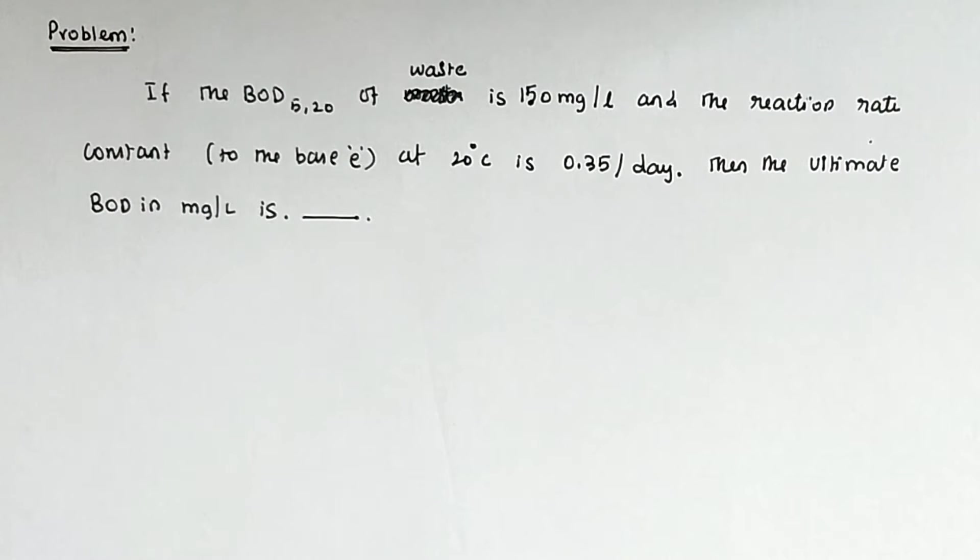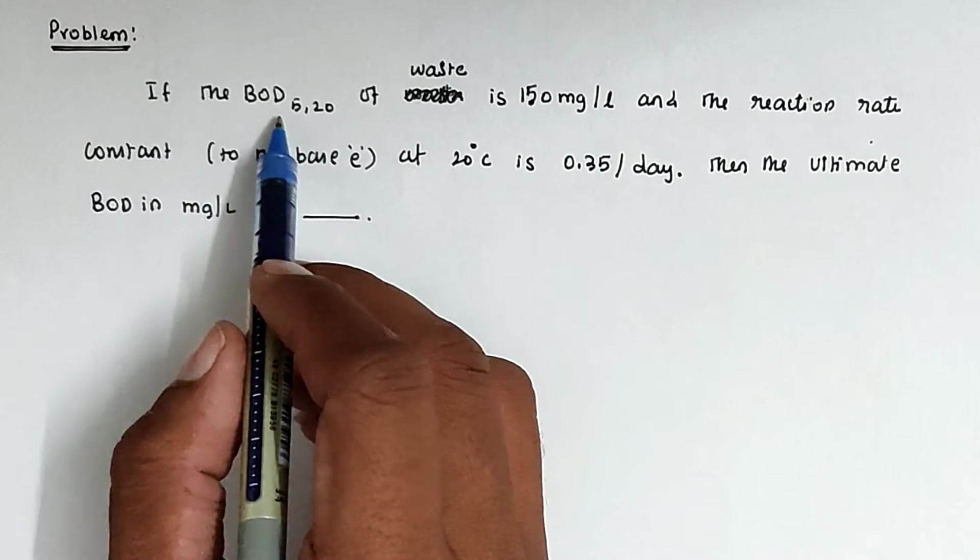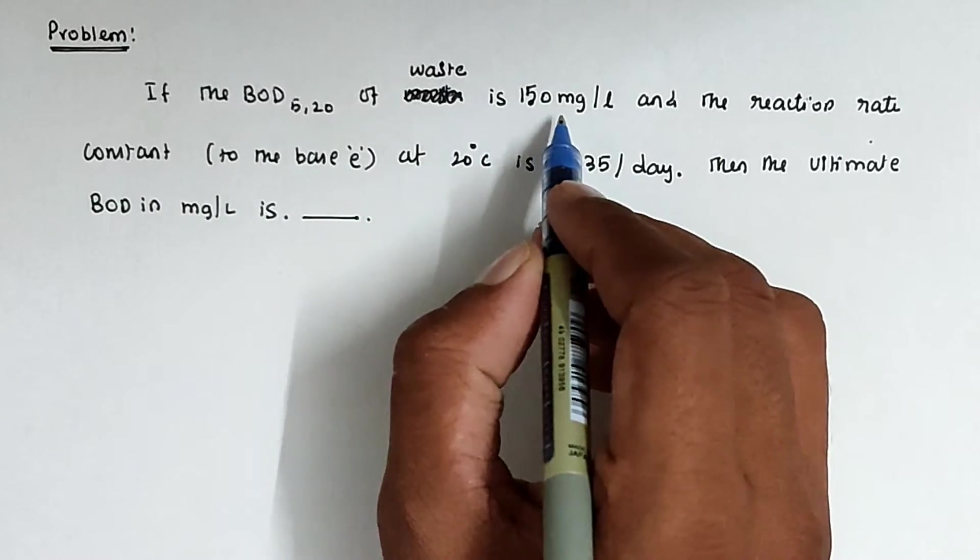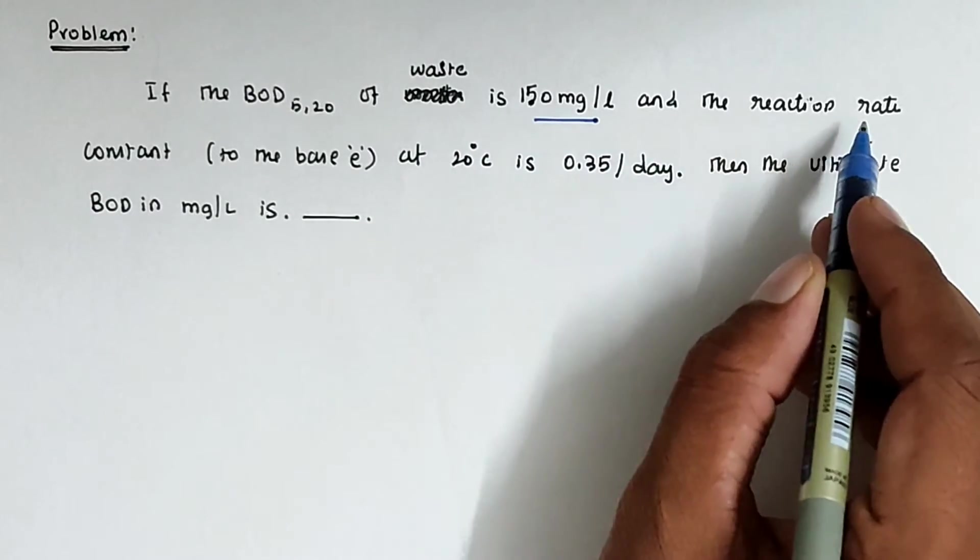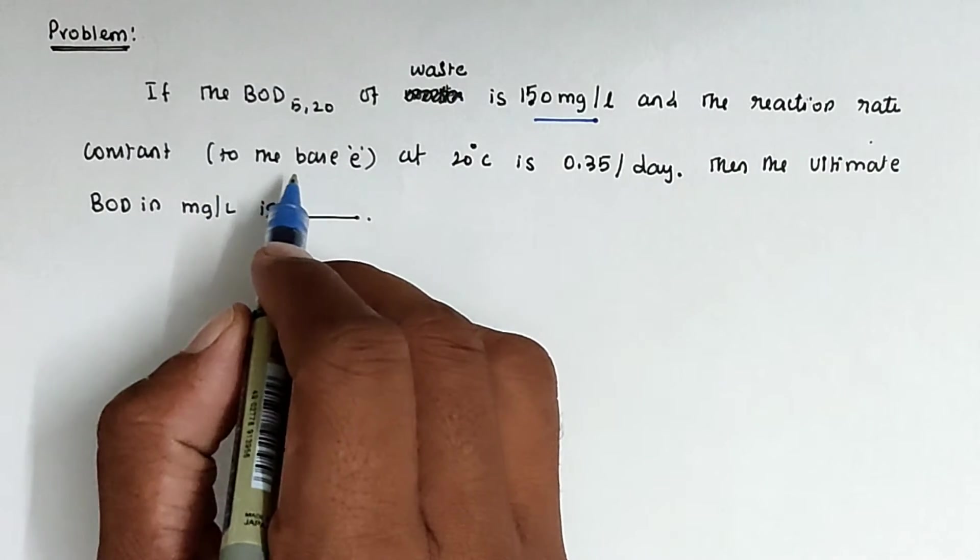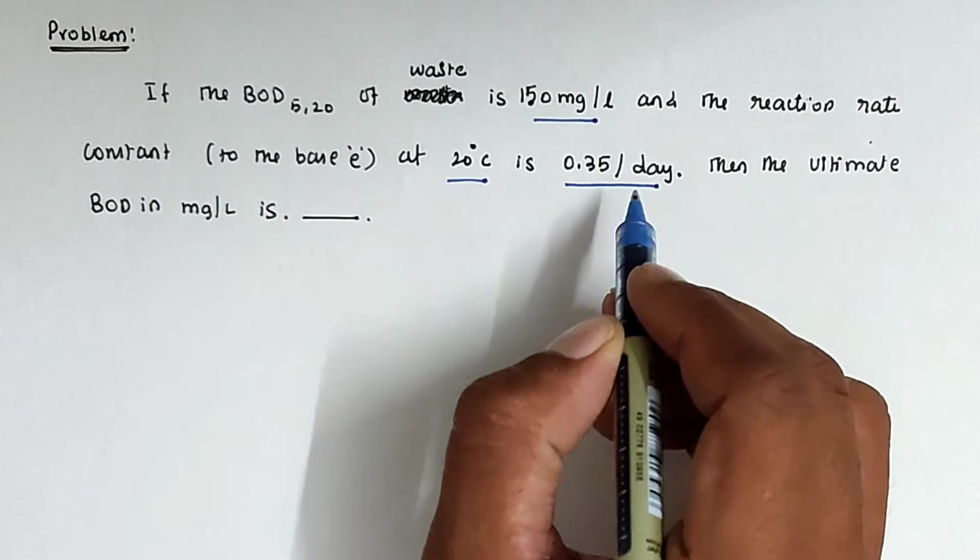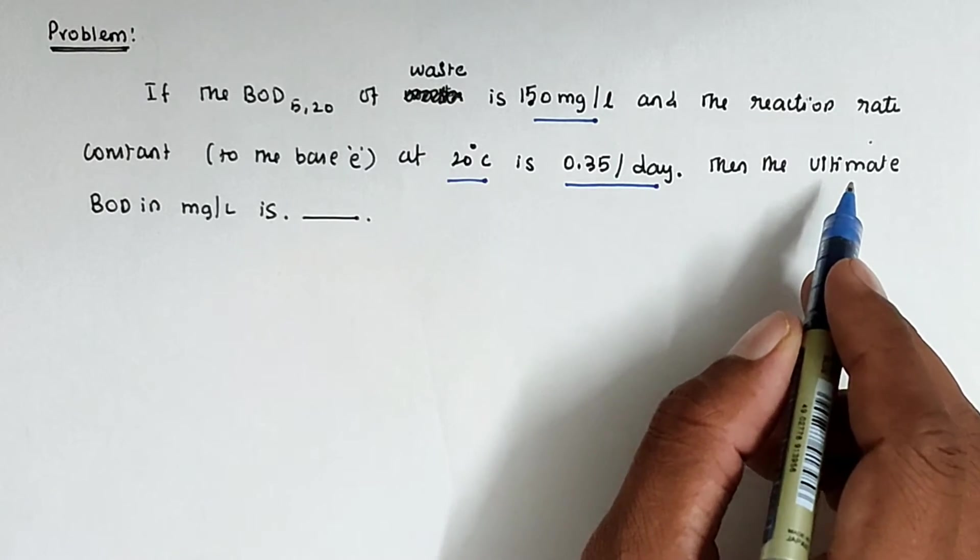Hello friends, welcome to Student Engineering Exam. Today we are going to see a problem related to wastewater engineering. The problem is: if the BOD 5,20 of waste is 150 milligrams per liter and the reaction rate constant, that is base K at 20 degrees Celsius, is 0.35 per day, then we have to find out the ultimate BOD in milligrams per liter.